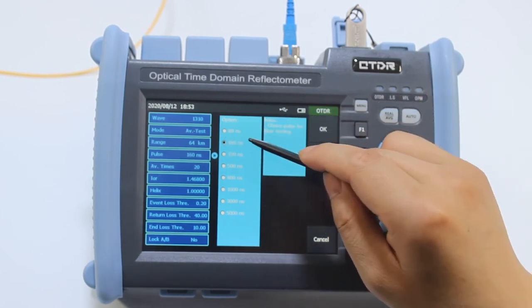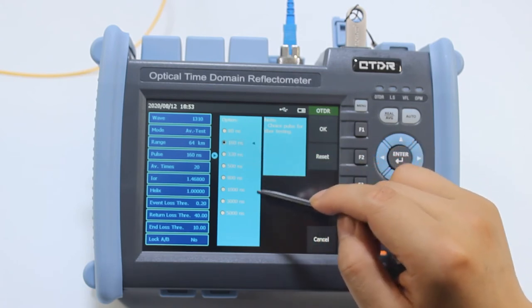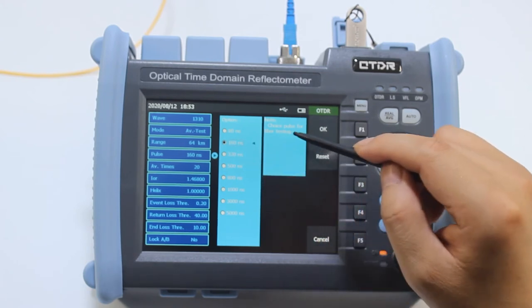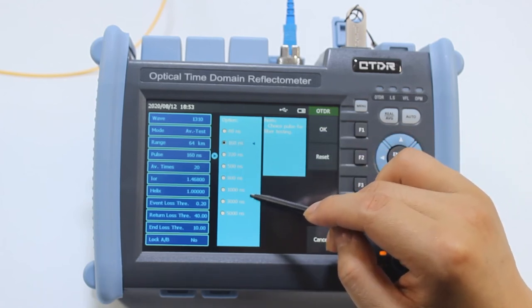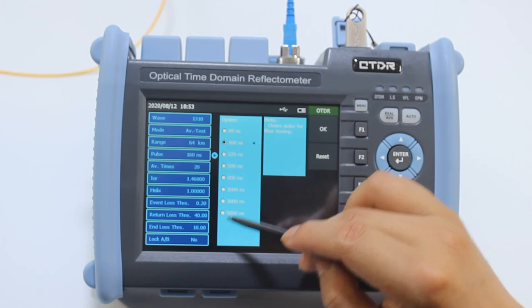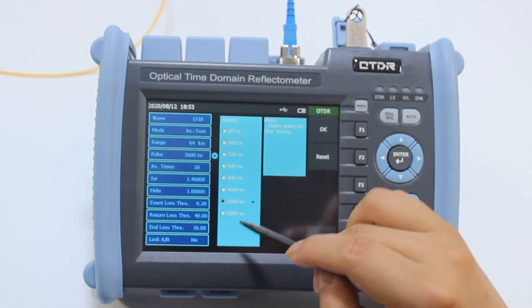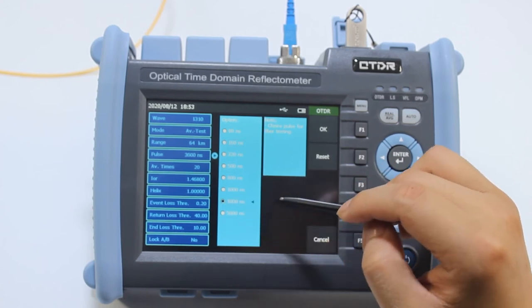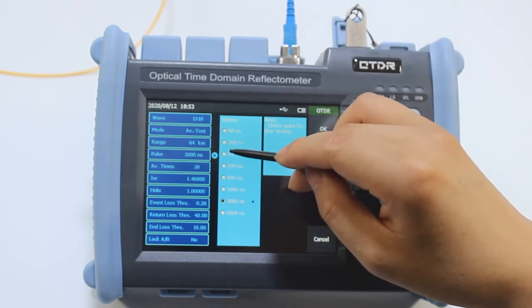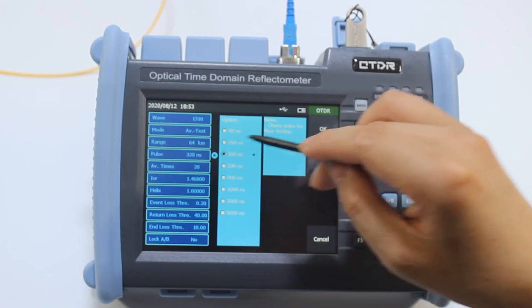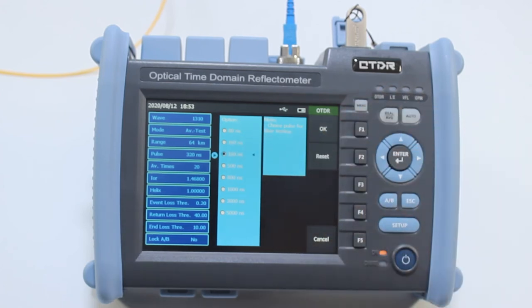For long distance measurement, we select wide pulse width. For example, 3000 nanoseconds. For 30 kilometers testing, we select 320 nanoseconds.